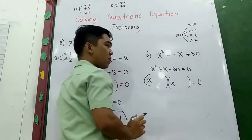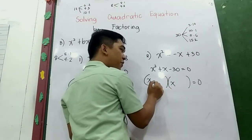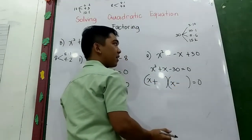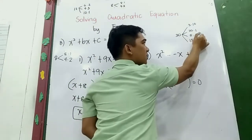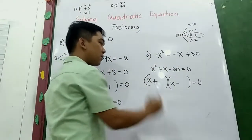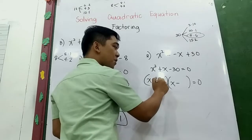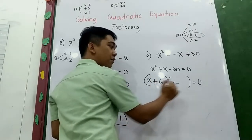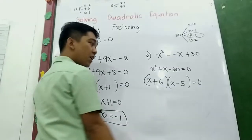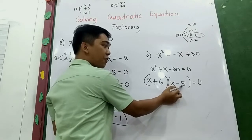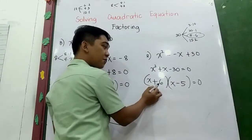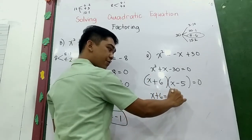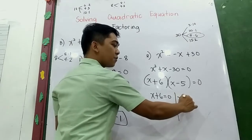Factors of 30 are: 30 times 1, 5 times 6, 15 times 2, and 3 times 10. Since this is negative 30, one of our signs must be positive and one negative. Choose 5 and 6. Since this is positive 1 and 6 is greater than 5, use positive 6 and negative 5. Check: 6 times −5 = −30, and 6 + (−5) = 1. Correct! So the factored form is (x + 6)(x − 5) = 0.